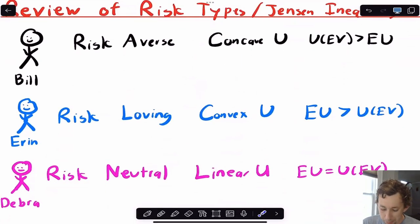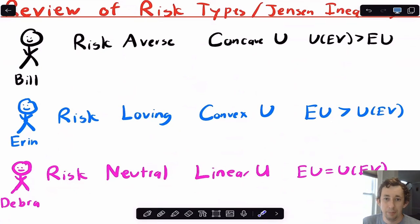We're going to start with Bill, who's risk averse. We're going to have Aaron, who's risk loving. And we're going to have Deborah, who's risk neutral.